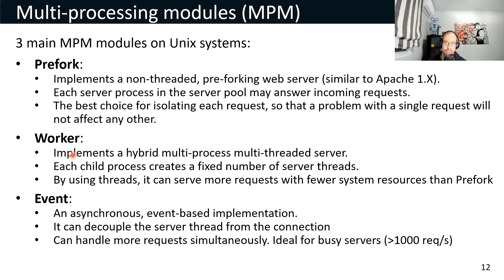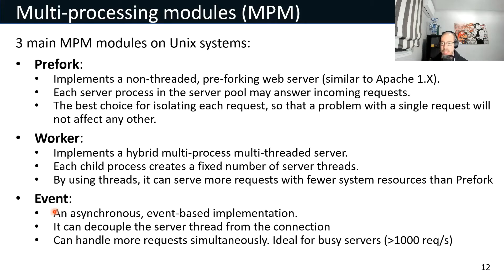We can differentiate three main MPM configurations on Unix systems. The first is the prefork configuration, which implements a pre-fork server without threads — that is how all versions of Apache used to work. The second is the worker MPM, which implements a hybrid multithreaded and multiprocess server where processes create a fixed number of threads. The last and newest is the event MPM, which is an asynchronous implementation able to reuse a single thread for new connections.